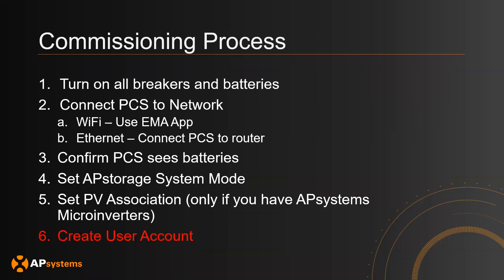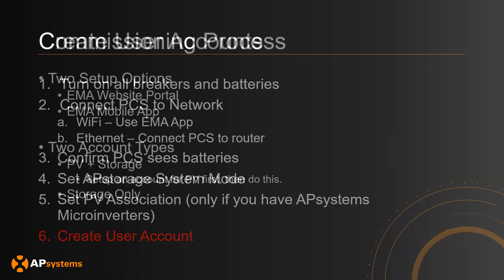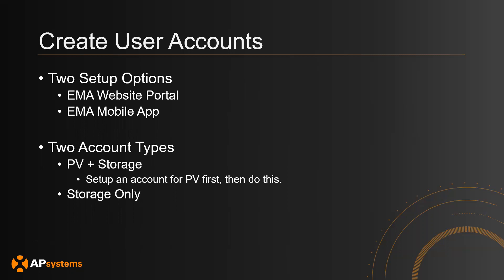The final step is to create the user account so the end user can access the AP storage system on their phone or on the website. There are two ways to set up user accounts: through the EMA website portal or using the EMA mobile app. There are also two account types: one for AP Systems PV and storage together, and one for storage only. If you have PV and storage, follow the same process for creating a PV account, then come back to add the storage device to the project.